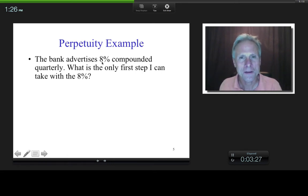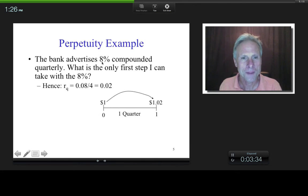And given that, again by definition, what is the only first step that I can do with that 8%? Divide it by four. Why? Because this 8% that's annual by convention, it says compounded quarterly. There's four quarters in one year.